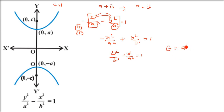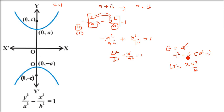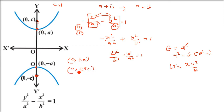For the conjugate hyperbola, the eccentricity relation changes: a² equals b²(e²−1). The latus rectum is 2a²/b, not 2b²/a. The vertices are at (0, plus-minus b) since it opens along the y-axis, so x remains 0 and y is plus-minus b. The foci are at (0, plus-minus be). These are the two key differences to remember: eccentricity formula and latus rectum.